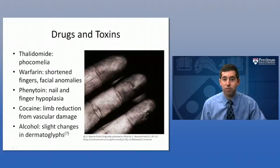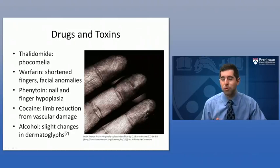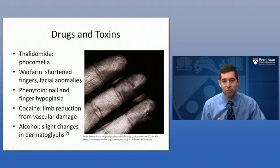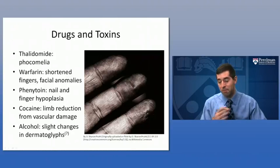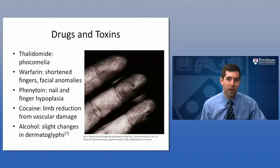Alcohol is well known for causing birth defects — fetal alcohol syndrome is unfortunately still relatively common worldwide. However, in terms of upper limb findings specifically, alcohol does not contribute that much. One anecdotal finding, noted with a question mark since we don't yet have definitive proof, is that alcohol may cause some changes in dermatoglyphs — the patterning of skin folds, most notably fingerprints.